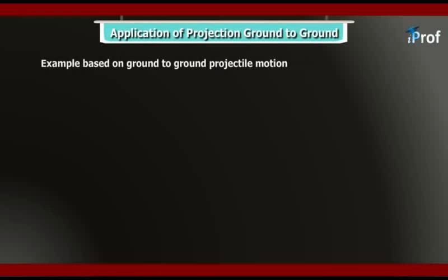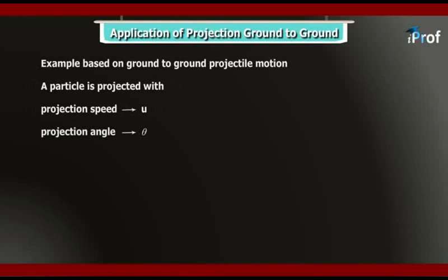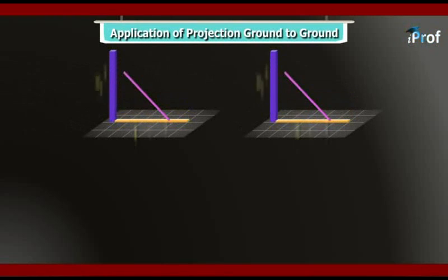Today we are going to look at an example based on ground-to-ground projectile motion. Suppose a particle is projected with projection speed u at projection angle theta with the horizontal, and the variation of the vertical component of velocity with time and distance x is shown by the graph. We have to find the horizontal and vertical components of velocity at t = 0, at the time of projection.